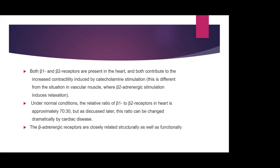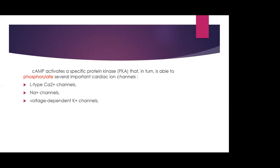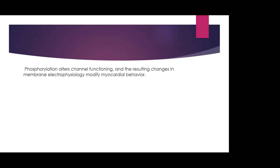Beta adrenergic receptors are closely related structurally and functionally. Both beta-1 and beta-2 are coupled to GS proteins, activating adenylate cyclase and leading to increased intracellular cyclic AMP. Beta-2 receptors couple more effectively than beta-1 and induce greater changes in cyclic AMP levels. The inotropic and electrophysiologic effects of beta signaling are indirect effects of increased intracellular cyclic AMP, which activates a specific protein kinase that phosphorylates several important cardiac ion channels — L-type calcium channels, sodium channels, and voltage-dependent potassium channels — thereby modifying myocardial behavior.